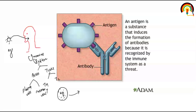Jaise yeh antigen body mein enter karta hai, toh antibody activate hogi aur is antigen se bind karegi. Yeh antigen aapne jis portion se bind karta hai antibody se, usko bolte hain epitope. Aur antibody aapne jis portion se bind karta hai antigen se, usko bolte hain paratope.